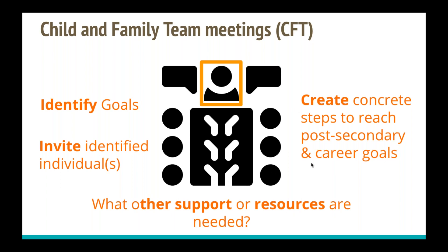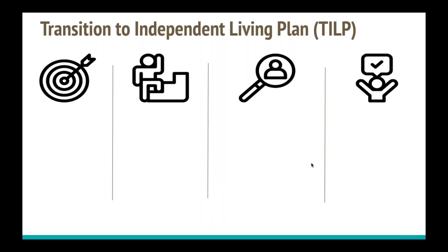The Transitional Independent Living Plan (TILP) can also be used to identify a plan and ensure the youth feel supported. This is a great opportunity to help the youth with goal planning. These plans are required to be addressed and revised every three to six months once the youth is 14 or over. Post-secondary pathways include vocational school, apprenticeship programs, short-term certificate programs, in addition to traditional two-year and four-year pathways. For example, a youth interested in receiving their union card can create goals around the schooling and steps needed to get there.